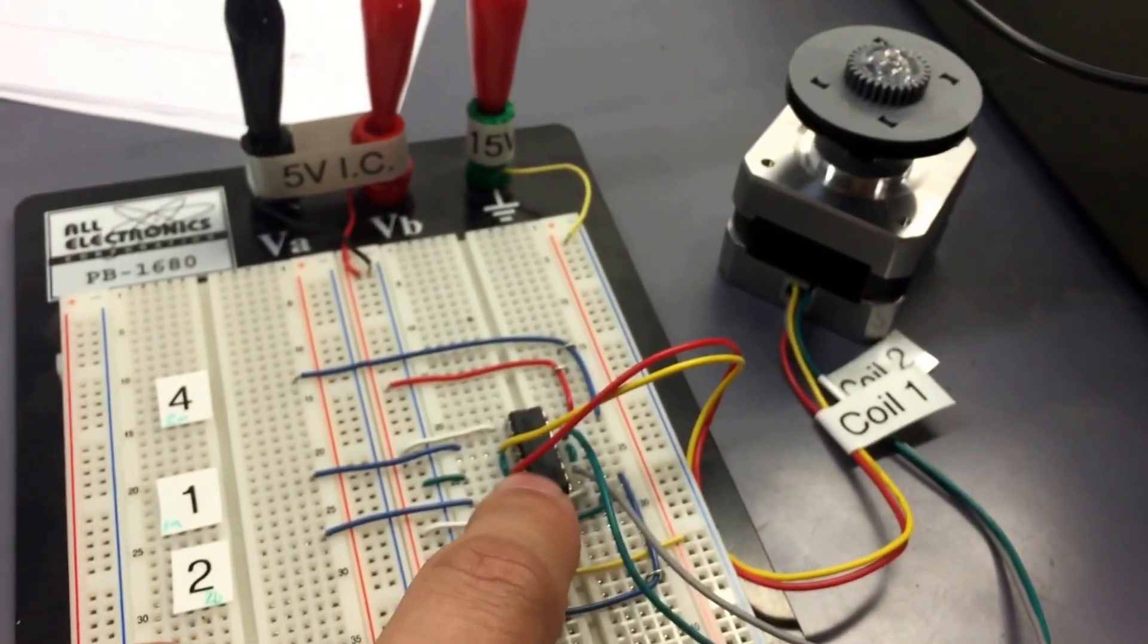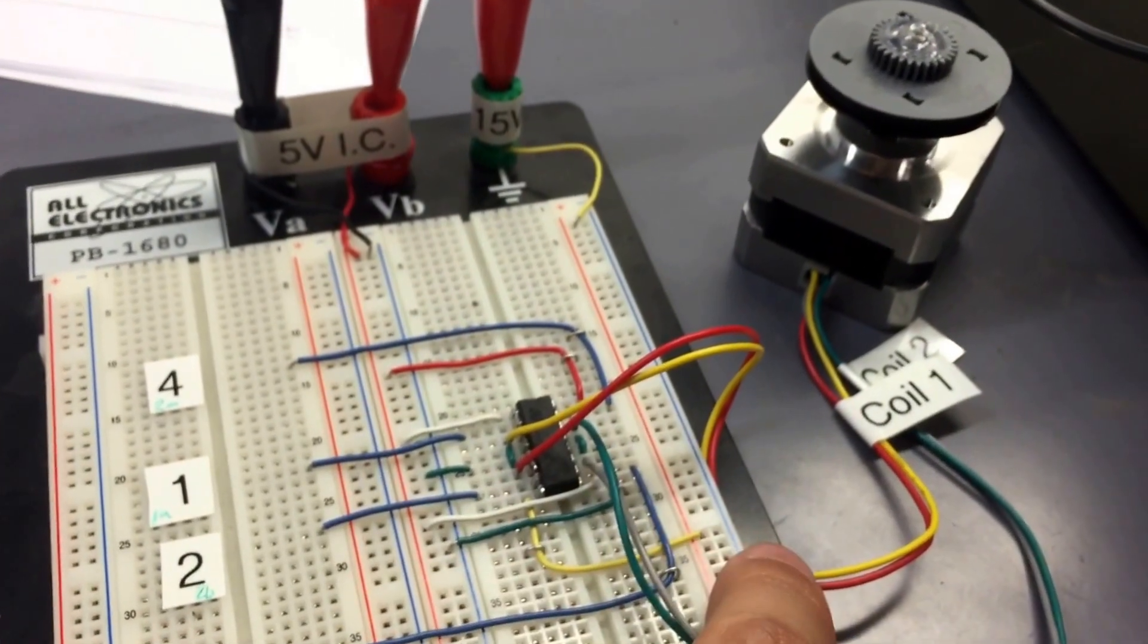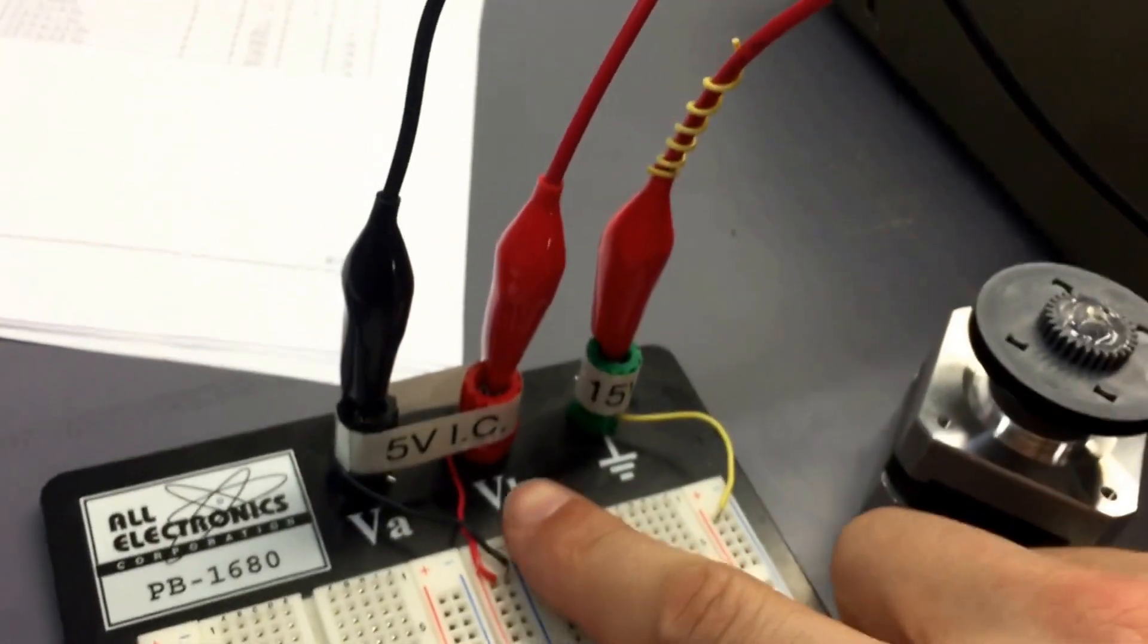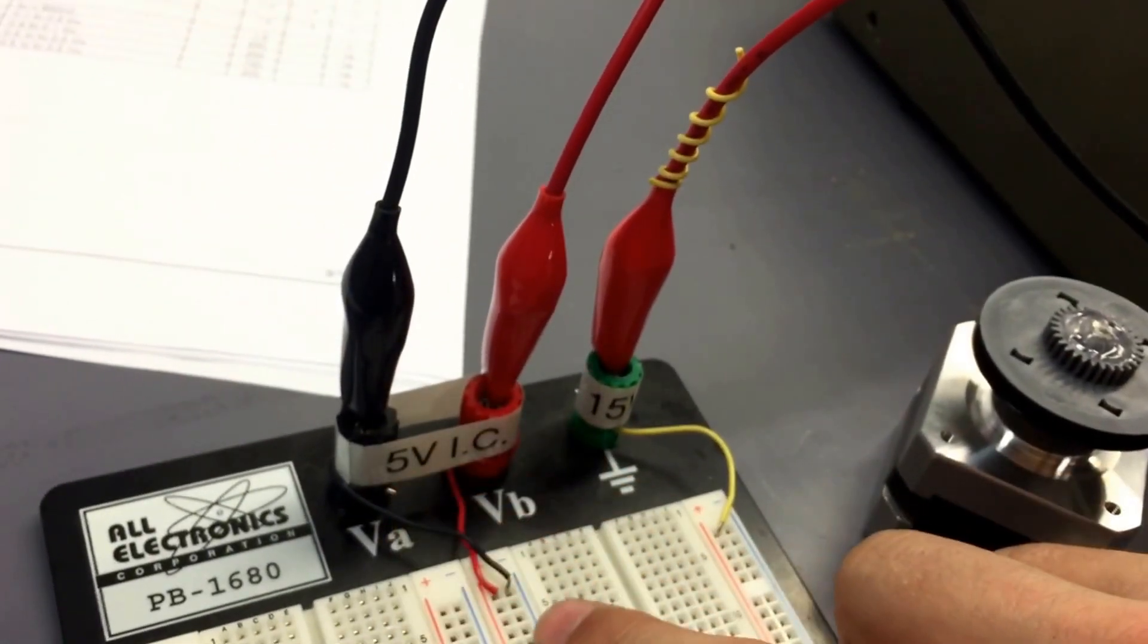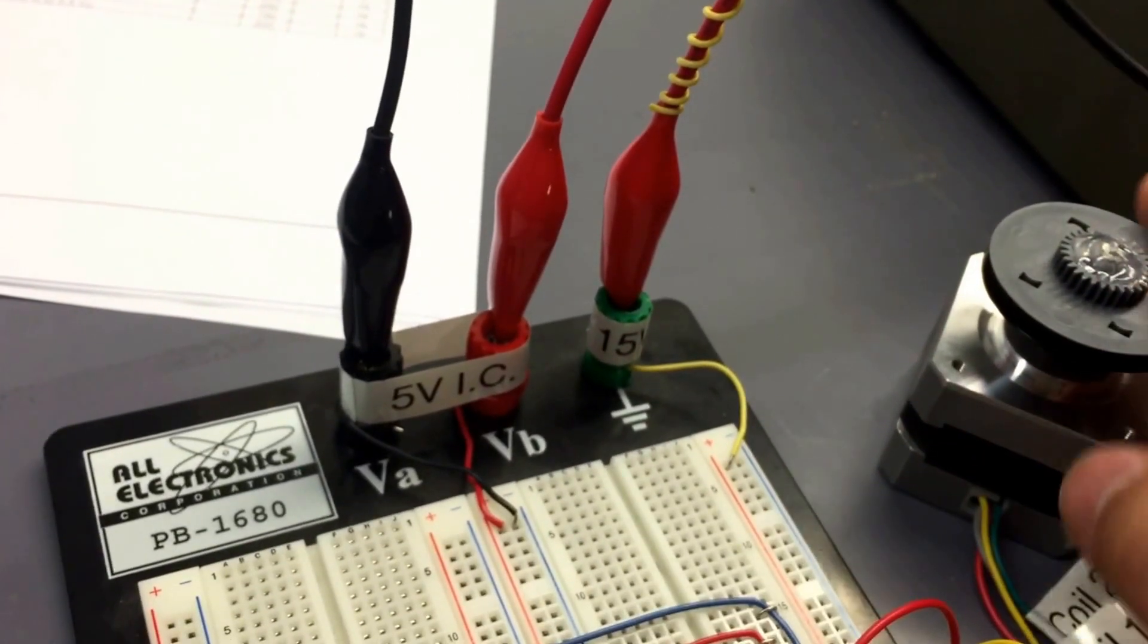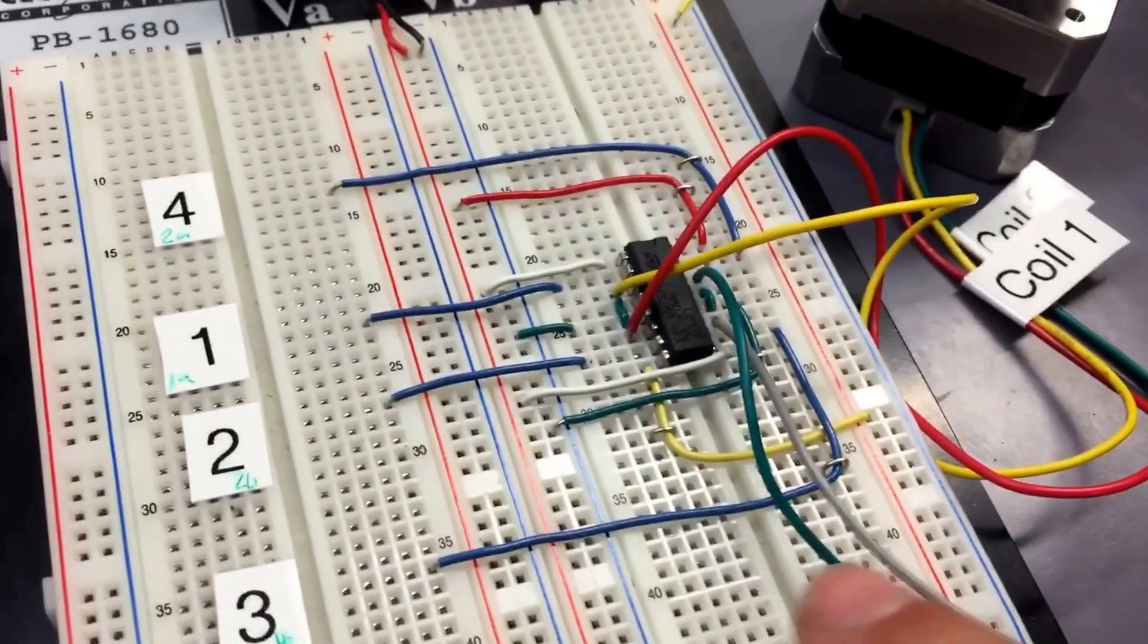So you're looking at two power supplies for this chip to operate correctly with this bipolar motor. We've got 5 volt for the integrated circuit, we've got the ground here is the common ground for both, and then we have a 15 volt that I set up particular for this motor right here.